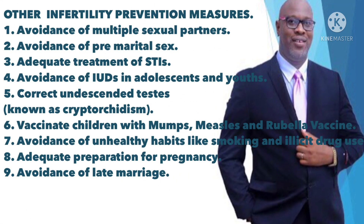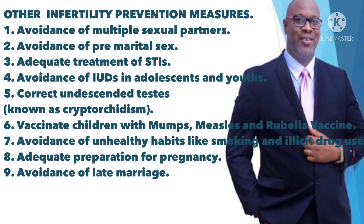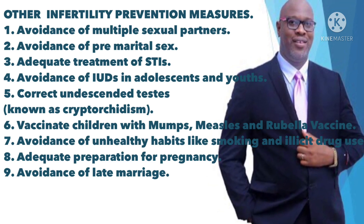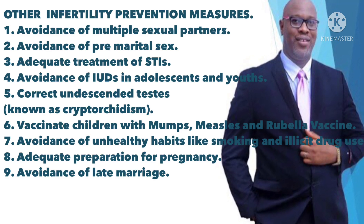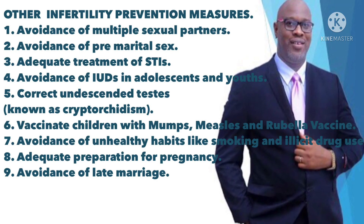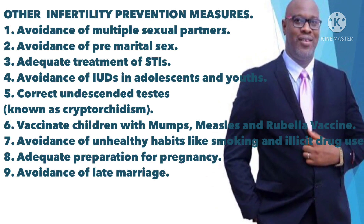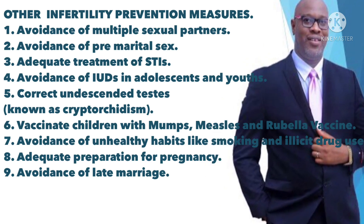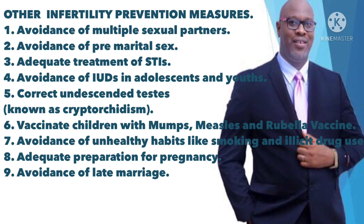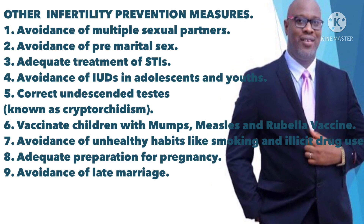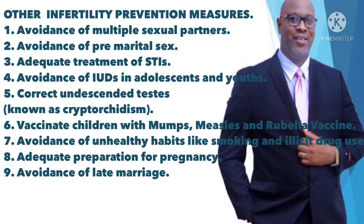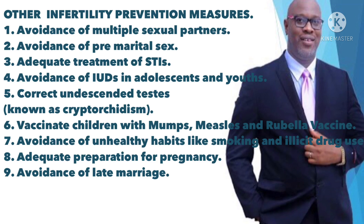Other infertility prevention measures may include: 1) avoidance of multiple sexual partners; 2) avoidance of premarital sex which may result in unwanted pregnancy and abortion; 3) adequate treatment of sexually transmitted infections; 4) avoidance of intrauterine devices in adolescents and youths; 5) correction of undescended testes, known as cryptorchidism — a condition where one or both testes have not descended into the scrotum at birth, but stay in the abdomen. Note that testicles are housed in the scrotum because sperm production requires a temperature a few degrees lower than the body, so an undescended testicle may not be efficient in sperm production.